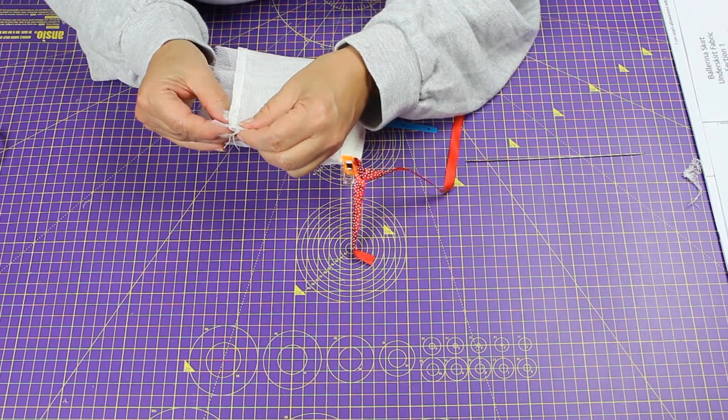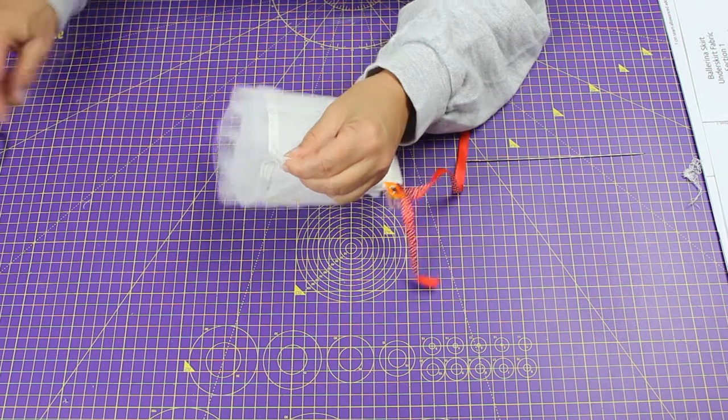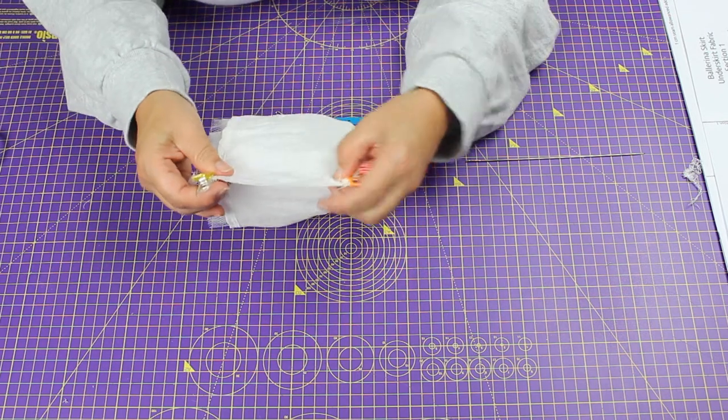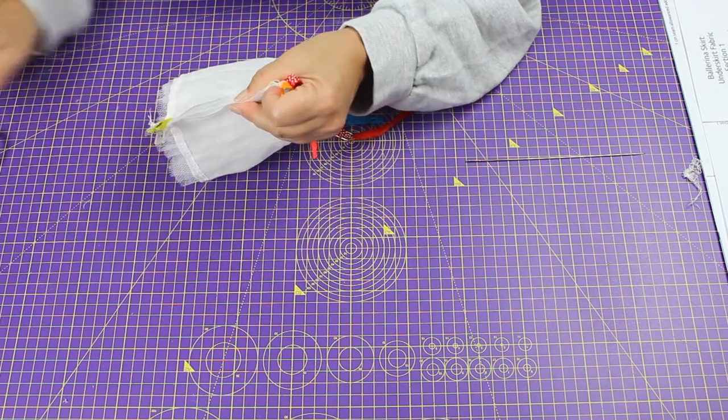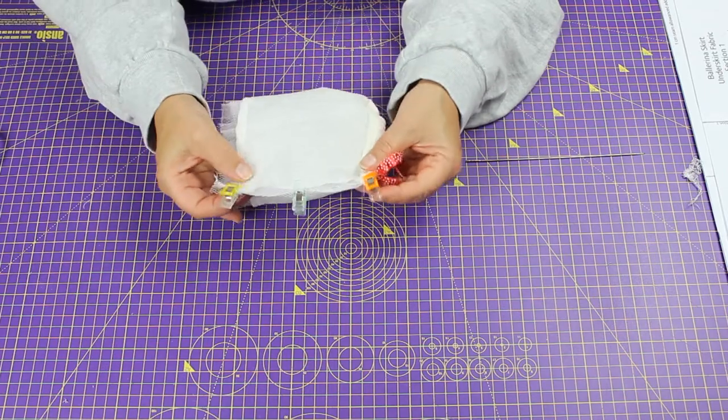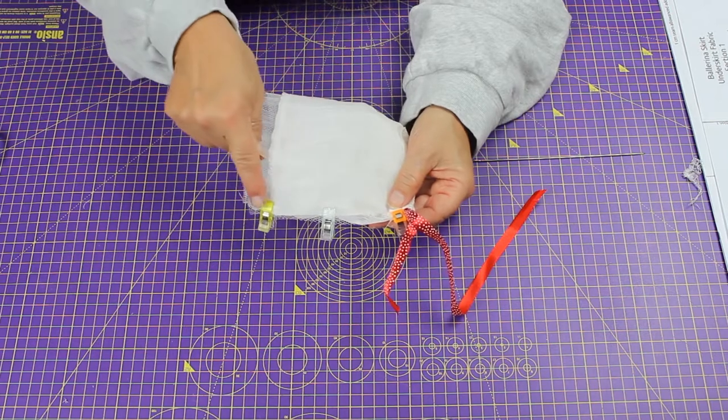It's not so essential that the net is perfectly matched, but it is essential that the fabric is perfectly matched. Just make sure you've got them together and that you're capturing all four layers in the back seam.